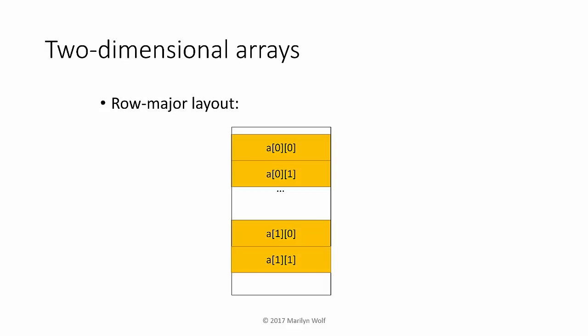In two-dimensional arrays we have a choice: does the left-hand index change fastest or the right-hand index change fastest? C uses a row-major layout in which the right-hand index changes faster than the left-hand index. So in this example we have A[0][0] followed by A[0][1], A[0][2], and so forth; when finished with that row we go to A[1][0], A[1][1], and so on. We compute the address by multiplying the first index by m and then adding the offset j.